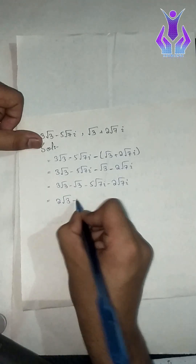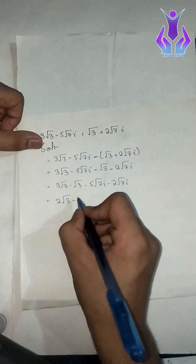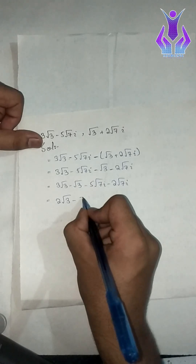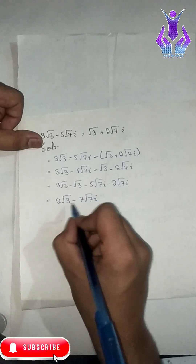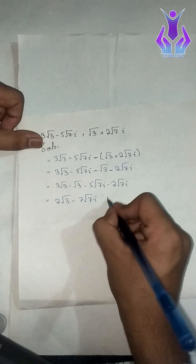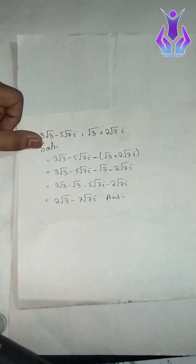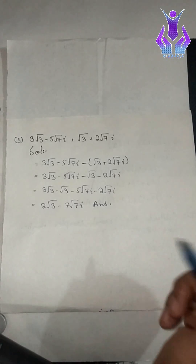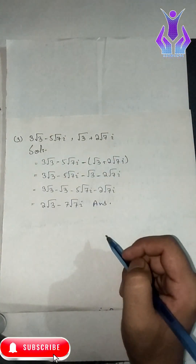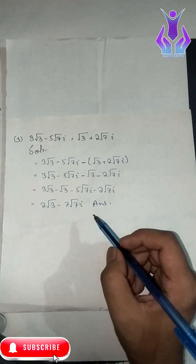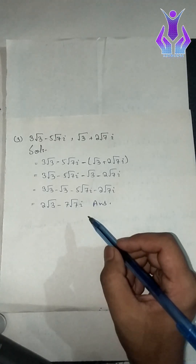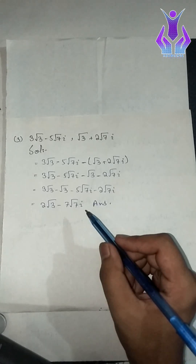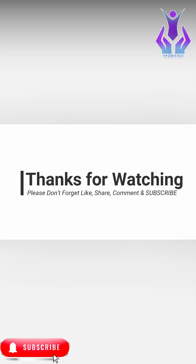2 under root 3, minus minus gives plus 7 under root 7 iota. This is the real and imaginary part, and this is our answer. So today is enough. If you have any question, you can ask me. Inshallah we will see you in the next video. Allah Hafiz.